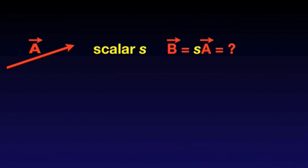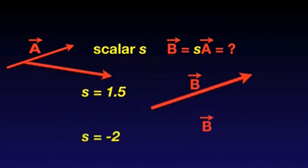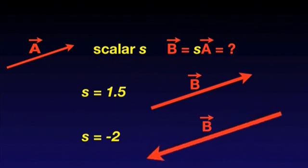Its direction is the same as A if the scalar is a positive number, and opposite to A if the scalar is a negative number. Let's consider two cases: S equals 1.5 and S equals minus 2. The resultant of multiplying vector A by S is shown on the screen.